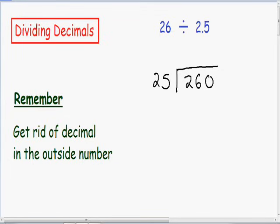25 goes into 26 one time. 1 times 25 is just 25. If you subtract 25 from 26, you're left with 1. And we've got to bring down our 0. 25 goes into 10 zero times since 25 is bigger than 10. 0 times 25 is just 0.